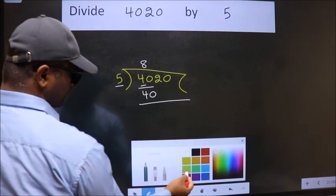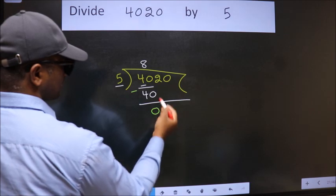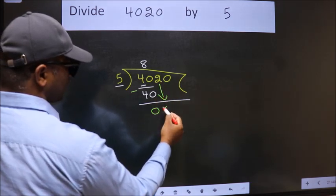Now, we should subtract. We get 0. After this, bring down the beside number. So, 2 down.